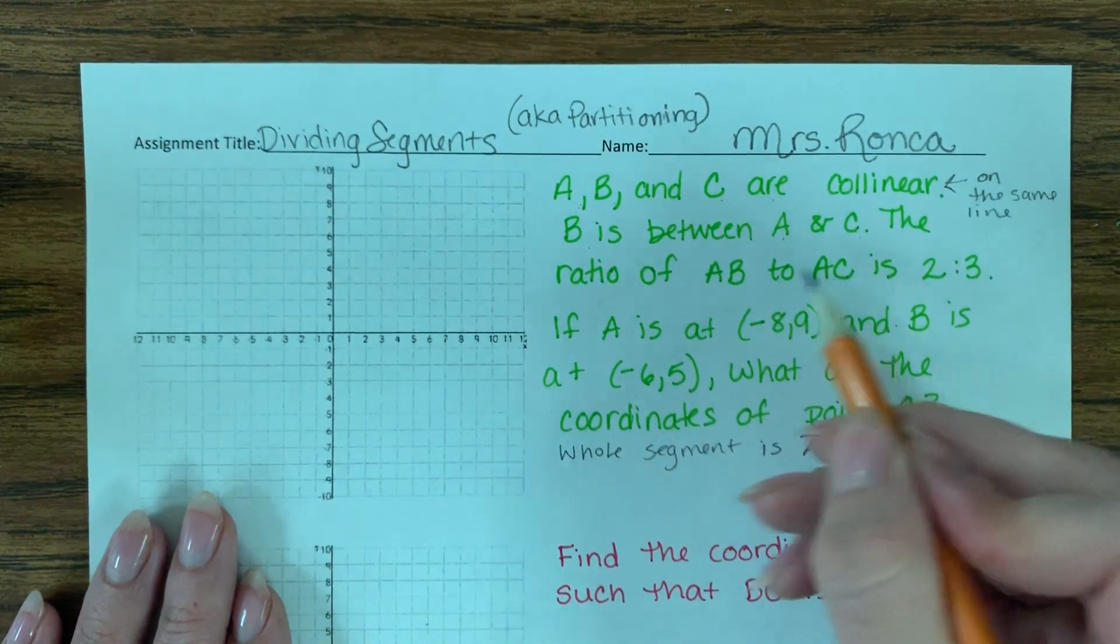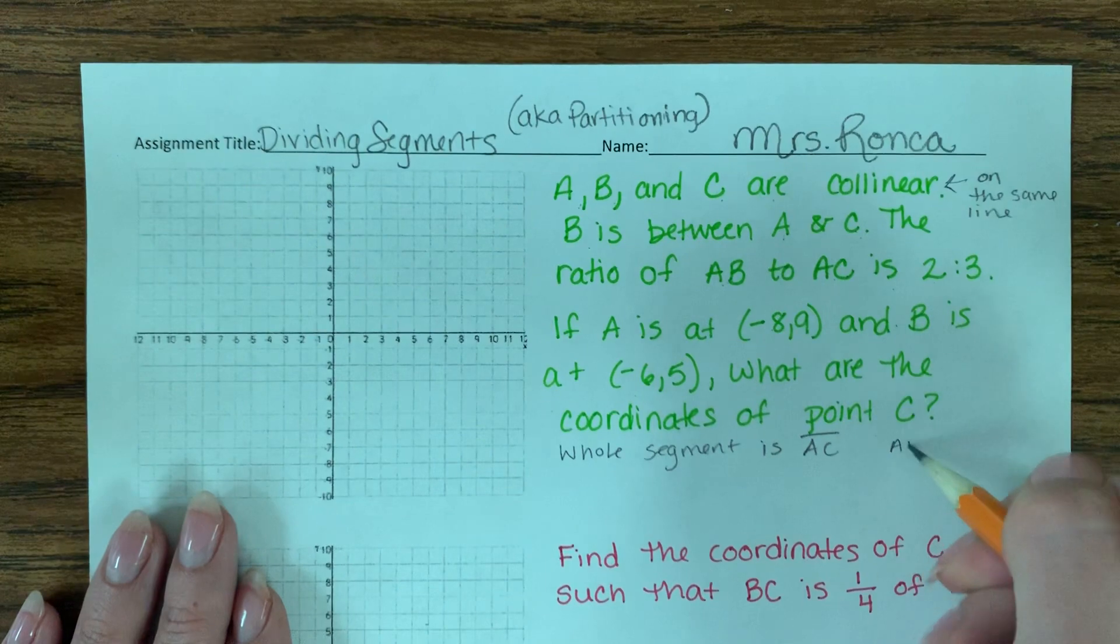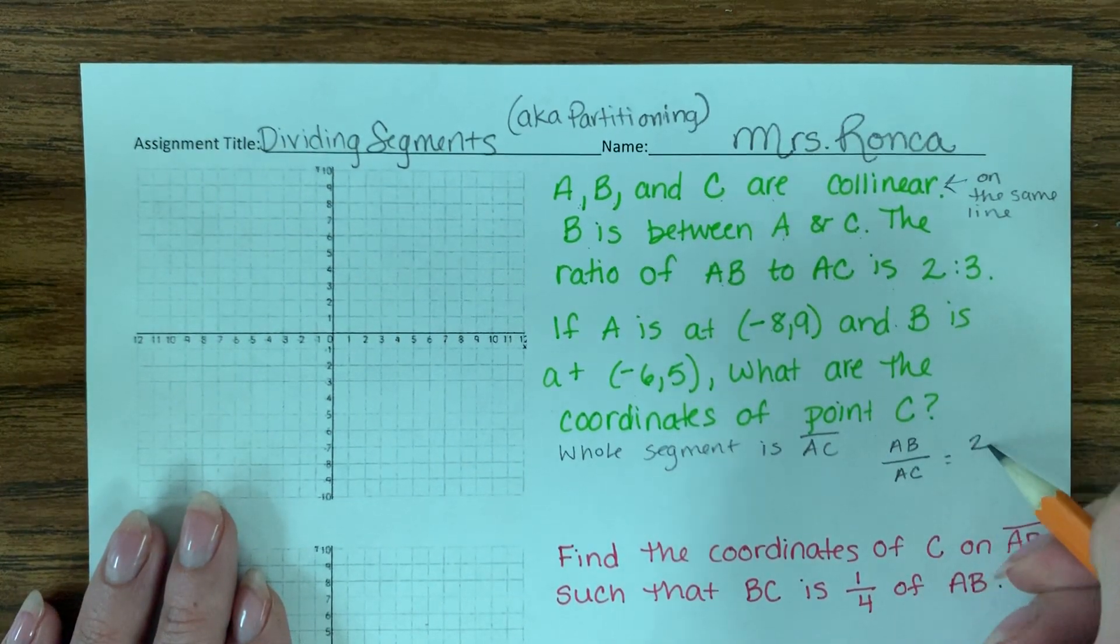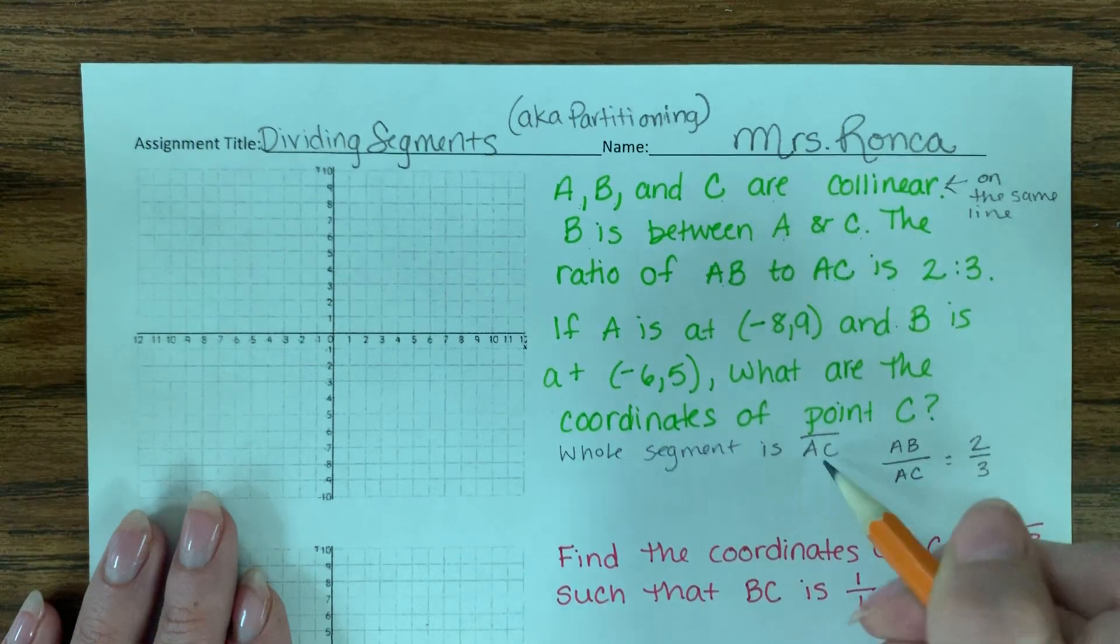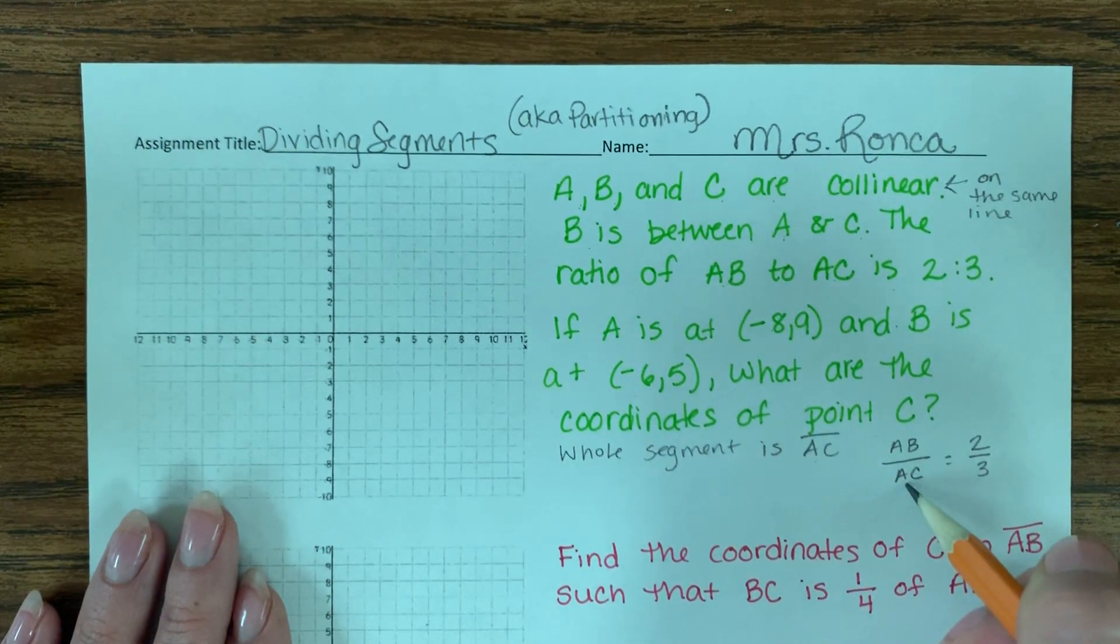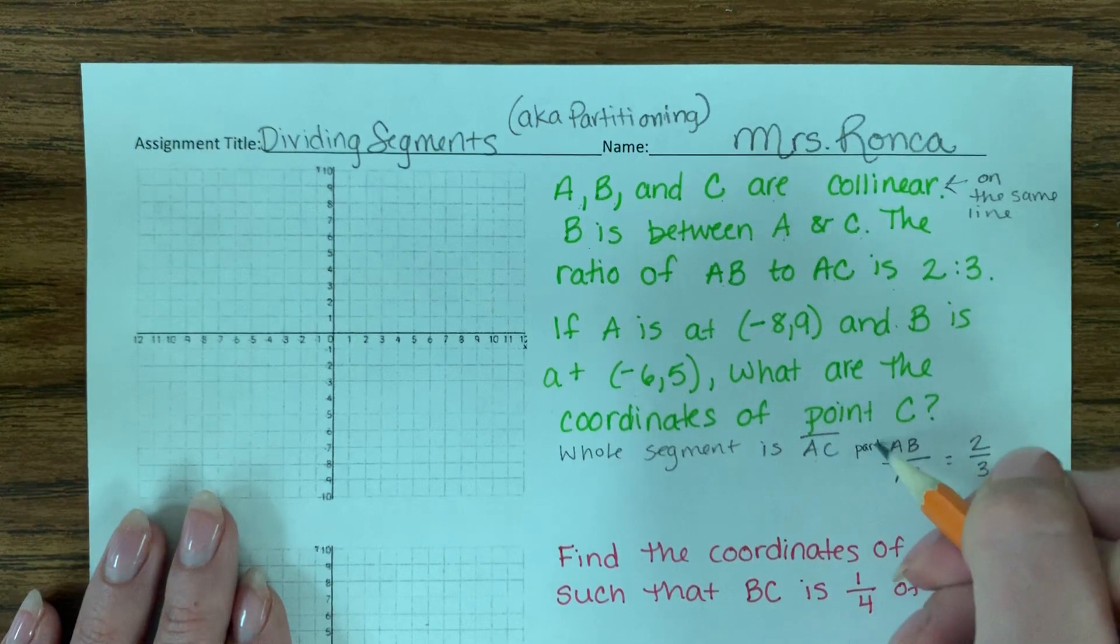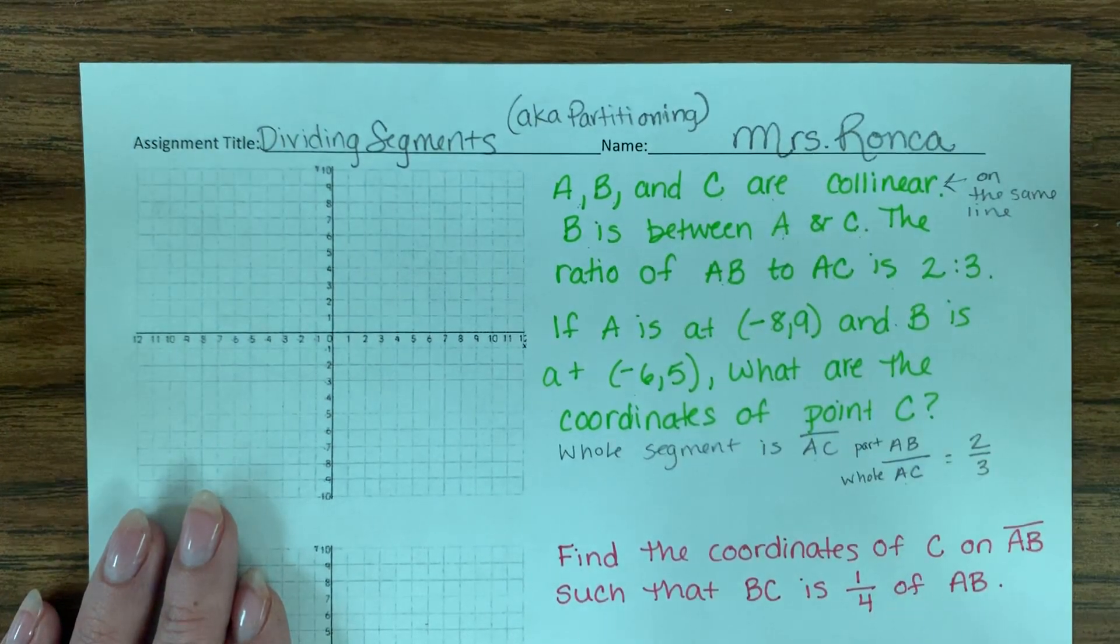So when they write this ratio, AB to AC, and they tell me that it's two to three, AC is the whole entire thing. So this is going to be a part to whole ratio.